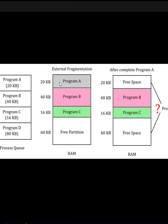For external fragmentation: Programs A (20 KB), B (40 KB), C (16 KB) are placed contiguously, but the free partition remaining is only 60 KB while Program D needs 80 KB — so D cannot be accommodated. This is external fragmentation. In another case, Program A completes and its 20 KB is freed. Now 20 KB and 60 KB are free but in two different non-contiguous locations, so Program D (80 KB) still cannot be placed. This is also external fragmentation.